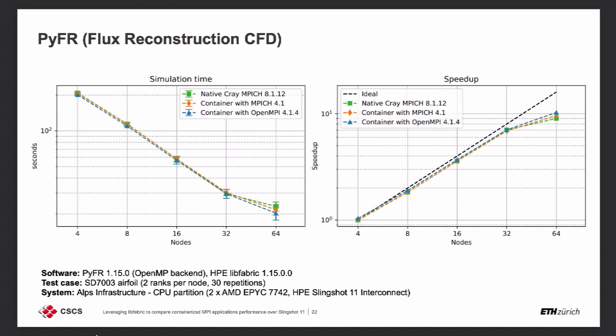Moving to PyFR — a Python-based CFD code implementing the flux reconstruction scheme, a Gordon Bell finalist in 2016 demonstrated to scale very well on HPC systems. The test case is an SD7003 airfoil simulation from a publication by the PyFR developer team. Same story: identical performance up to 32 nodes, and the containers even edge out the native variant slightly at 64 nodes.